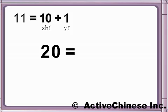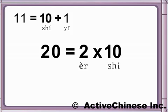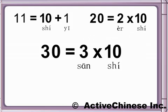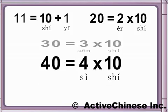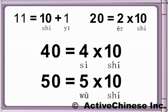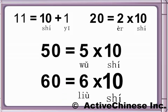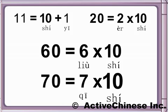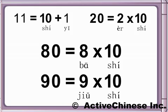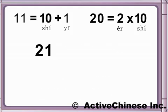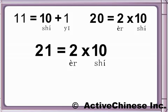20 is two-ten: 二十. Twenty-one is two-ten-one: 二十.